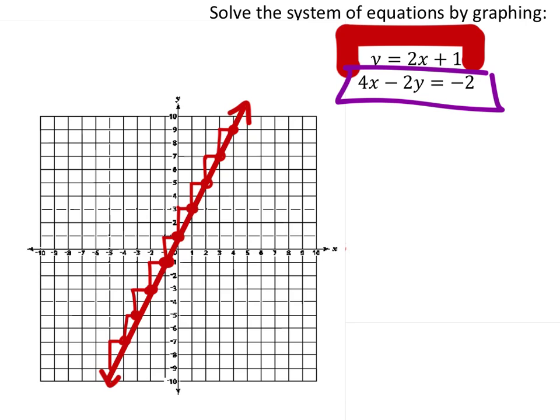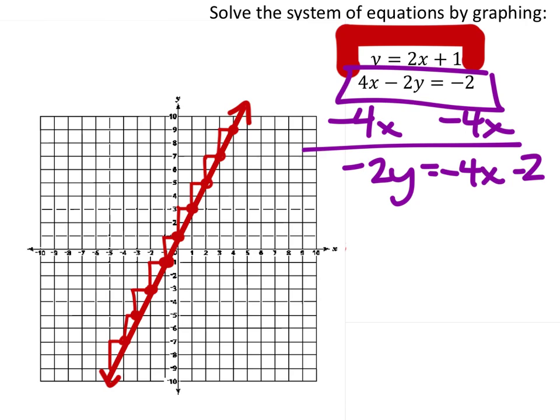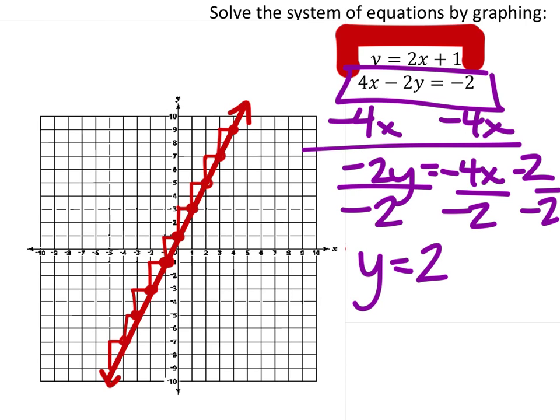The next equation we'll put in purple, but to graph this, some of you may need to change this into slope-intercept form. So we would subtract 4x from both sides, so that gives us negative 2y equals negative 4x minus 2. And then we'll divide everywhere by negative 2 to isolate the y. So y equals 2x plus 1.